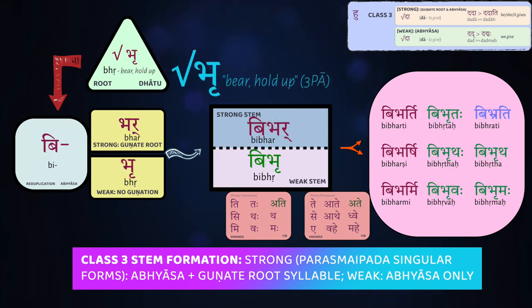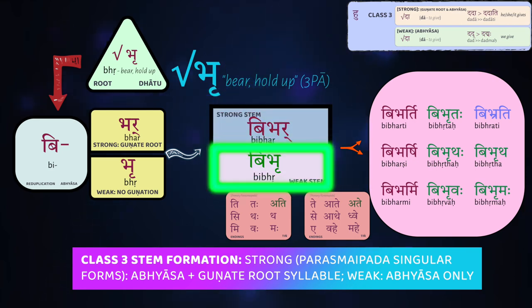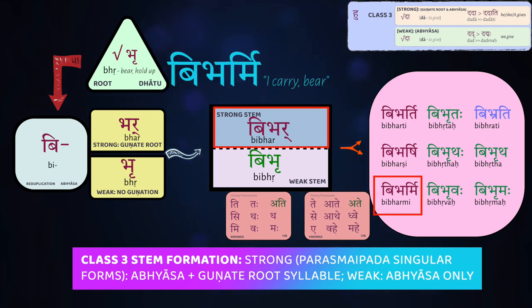Let's look at a few other Class 3 roots. The root bhṛ means 'to carry or bear up something' — cognate with the English word 'bear.' This reduplicates as bi-bhṛ, as we saw, losing aspiration and reducing the vocalic ṛ to short i. When you gunate that, you get bibhar as the strong stem, and bibhṛ as the weak stem. So we get bibharti — 'he, she, it carries or bears.' Bibharṣi — 'you carry.' Bibharmi — 'I carry.'